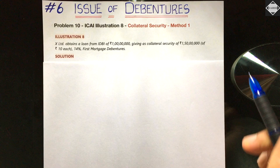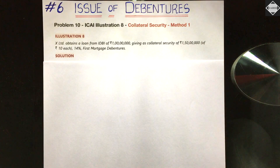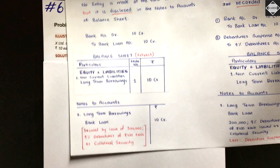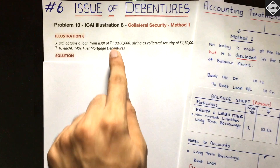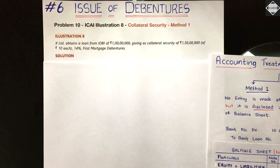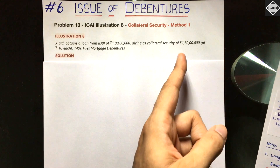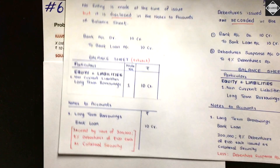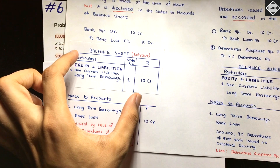In Method 1, we just make a disclosure in the notes to accounts: when recording the bank loan of 1 crore, we write in brackets 'secured by issue of 14% debentures of rupees 10 each — 1 crore 50 lakhs.' That's all. In the balance sheet, the debentures will not appear because we have not recorded them — it's just a disclosure.